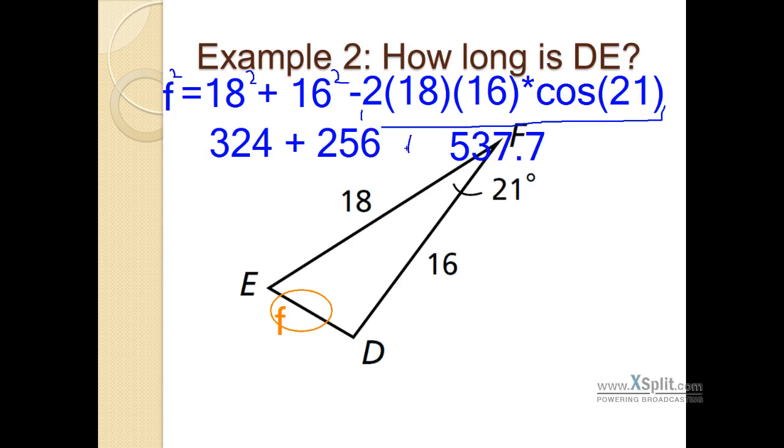If you ever get into computer science, 256 is a pretty significant number. Get into some computer science. It's great. Looking at this equation now, all we've done so far is PEMDAS. We've simplified the squared, simplified the squared, and then punched all of this piece into our calculator. We can go ahead and add all of these values together on the right side. 324 plus 256 subtract 537.7. You're going to wind up with 42.3. That's going to leave us with f squared is equal to 42.3.